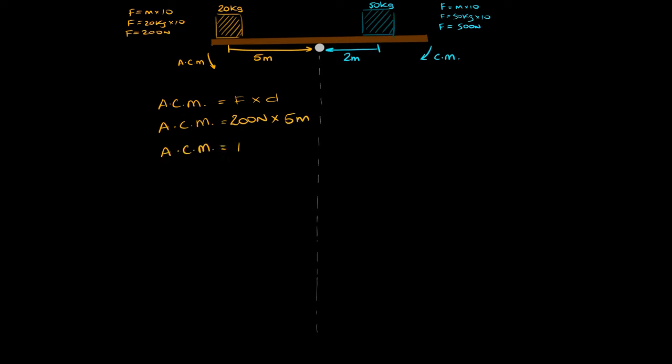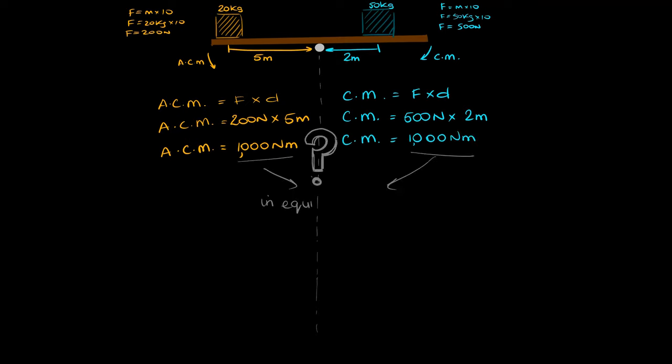The first step is to find the force that both Isaac and his grandmother are making by multiplying their masses by 10. Then, the moments for each person is calculated by multiplying their force and distance from the pivot. But wait, their moments are both perfectly equal. This means that the seesaw is in perfect equilibrium, meaning that the total clockwise and anticlockwise moments are perfectly equal.